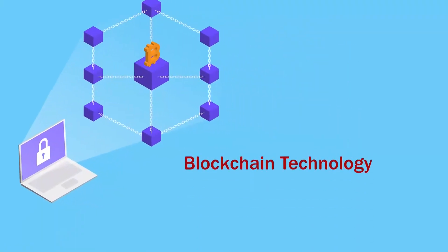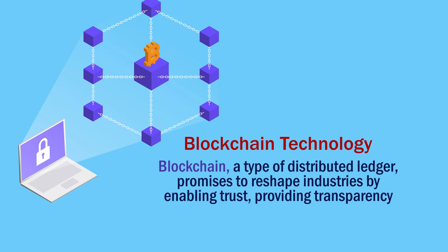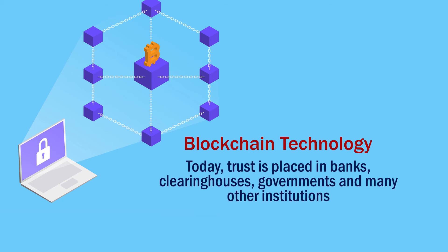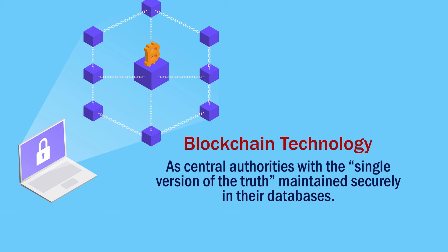Blockchain is a type of distributed ledger that promises to reshape industries by enabling trust, providing transparency, and reducing friction across business ecosystems — potentially lowering costs, reducing transaction settlement times, and improving cash flow. Today, trust is placed in banks, clearing houses, governments, and other institutions as general authorities. Blockchain provides an alternative trust model and removes the need for central authorities in arbitrating transactions.